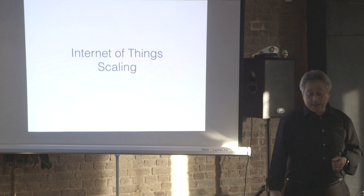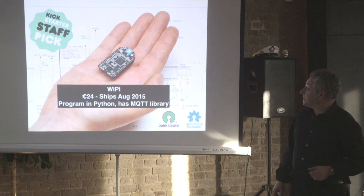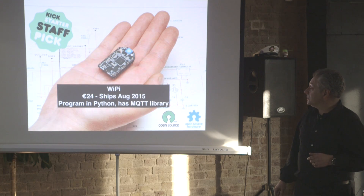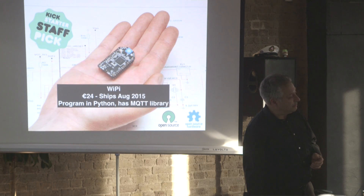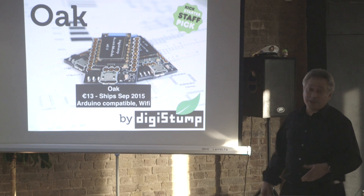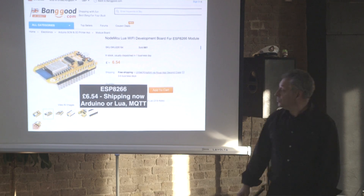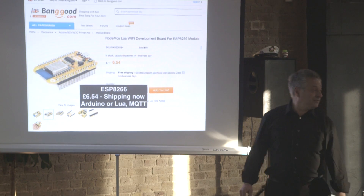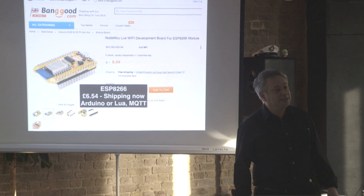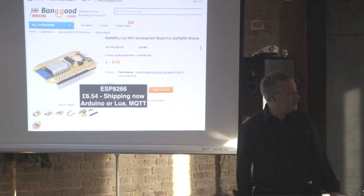Another thing is scaling. To illustrate this, I'm going to show you some of the hardware that's coming along in just the next couple of months. There's this — Wi-Fi, program in Python, 24 euros, ships in August, uses MQTT. That's a programming platform. Another one is the Oak — fantastic, Arduino-compatible, with Wi-Fi. Really, really cheap things. And here is what I ordered this morning: £6.84 for a Wi-Fi development system with a 32-bit processor. The bottom line is it's going to be incredibly cheap to put devices into virtually anything. And these are retail prices, one-offs.